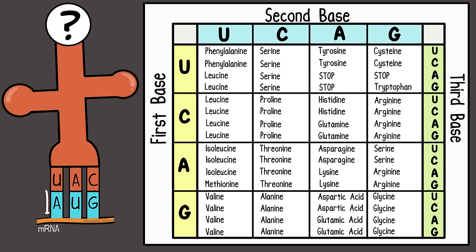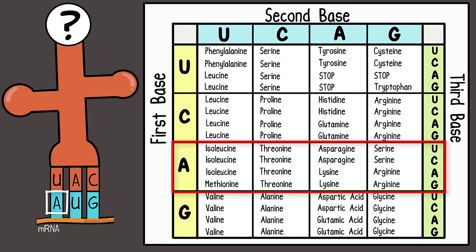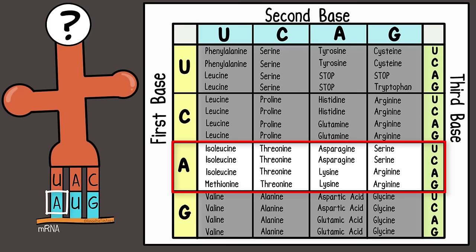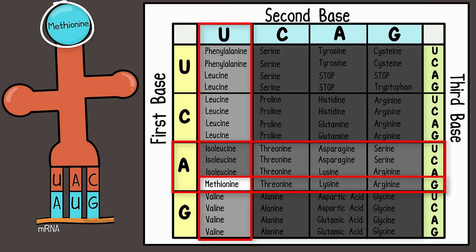We'll use a rectangular one, and remember, it's the mRNA codon that we look at—not the tRNA anticodon. Notice on the left side of the chart, it is for the first base. The top is for the second base, and the right side is for the third base. We're looking at the codon AUG. First base letter A—we isolate this row. Second base letter U—we isolate this column, narrowing it down to where they intersect. Third base letter G. The codon AUG codes for the amino acid methionine.